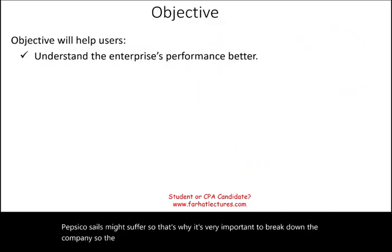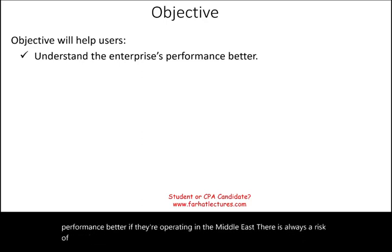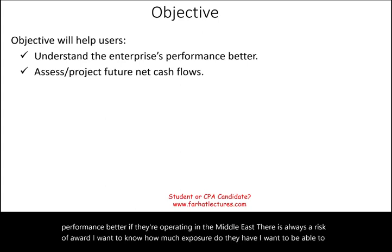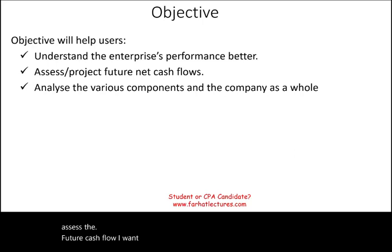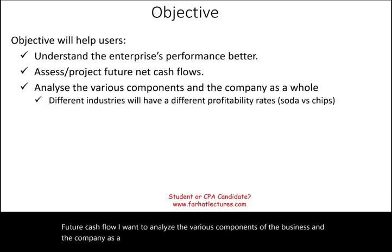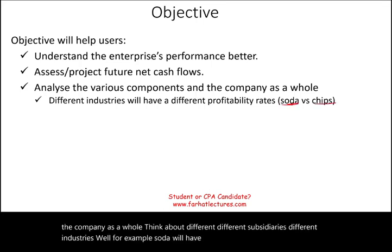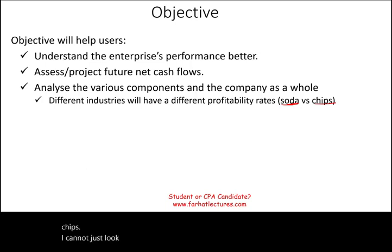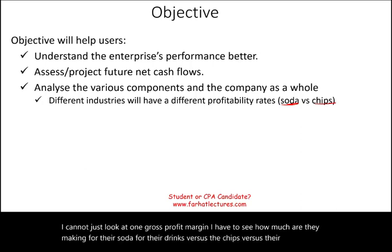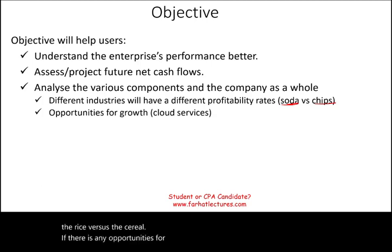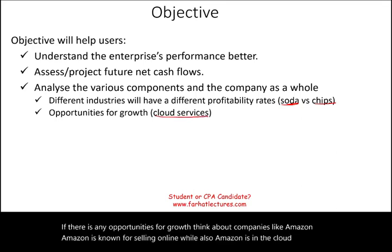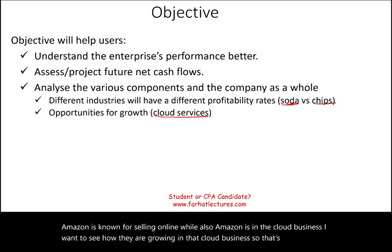So that's why it's very important to break down the company. The objective is to help users understand enterprise performance better. If they're operating in the Middle East, there's always a risk of war — I want to know how much exposure they have and assess their future cash flow. Think about different subsidiaries and different industries: soda will have a different gross margin than selling chips. I cannot just look at one gross profit margin — I have to see how much they're making for soda versus chips versus pasta versus rice versus cereal. And think about companies like Amazon — known for selling online, but also in the cloud business. Segment reporting shows how well they are growing in that cloud business.